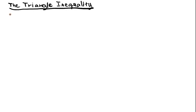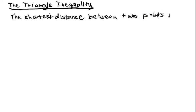There's one final property of Euclidean space that's really important and it summarizes the idea that the shortest distance between two points is a line.